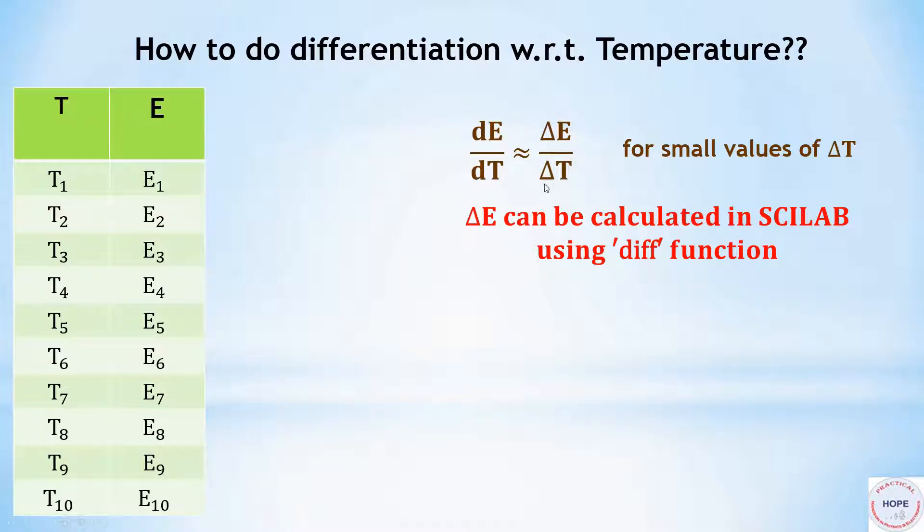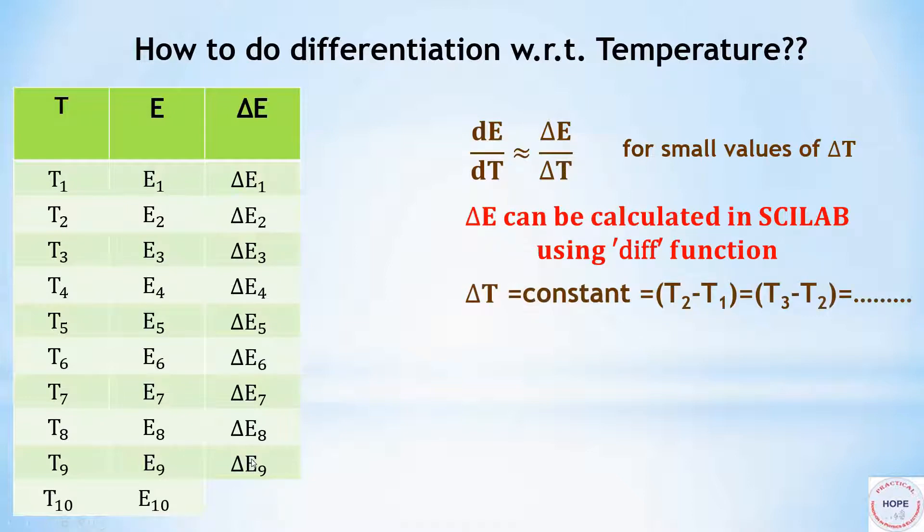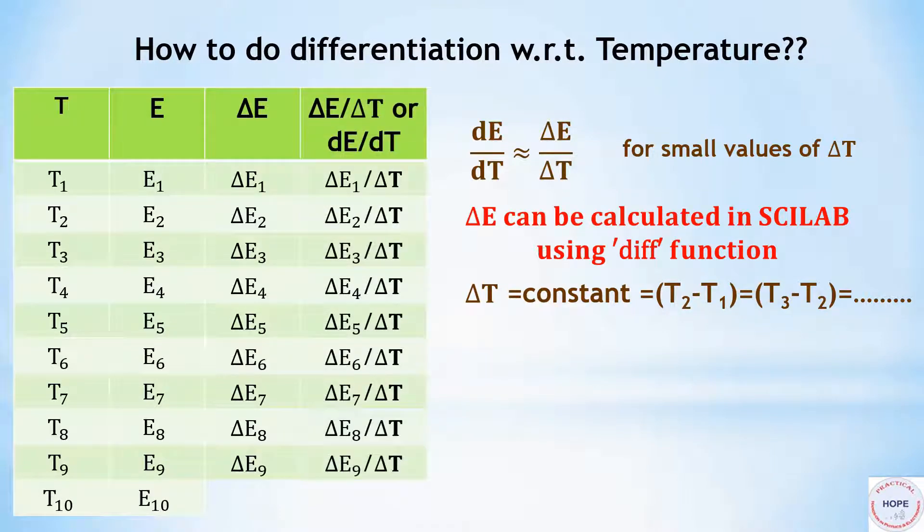Once we do that, we get the values of delta E1, delta E2. Delta E1 is E2 minus E1, delta E2 is E3 minus E2, and so on. Now we are assuming that in our case, delta T is constant, that is T2 minus T1 equals T3 minus T2, and so on. Now we can divide the values of delta E by delta T to get dE by dT at every point.